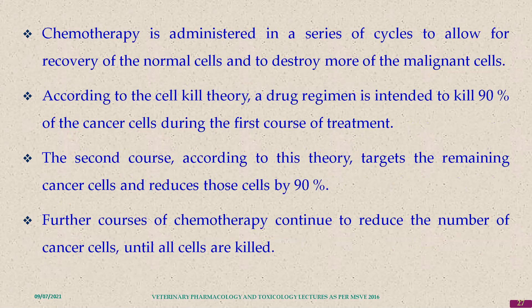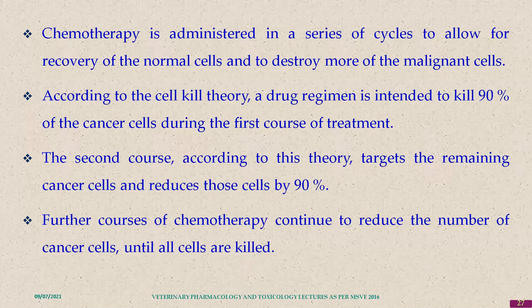Anti-cancer treatment is not a single-day treatment; it takes many cycles. Many cycles are required to completely eliminate cancer cells. According to the cell kill theory, a drug regimen is intended to kill 90% of cancer cells during the first course of treatment. The second course targets remaining cells and reduces them by 90%. Each cycle of antineoplastic drug administration kills 90% of proliferating cells, until all tumor growth is controlled.